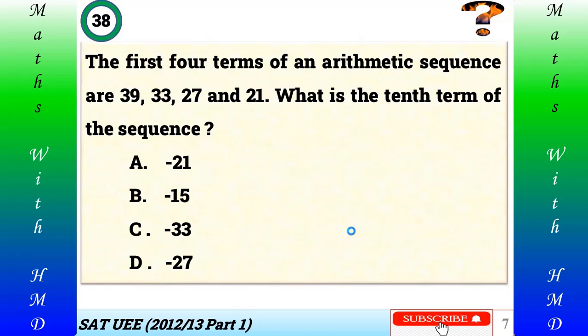Question number 38: The first four terms of an arithmetic sequence are 39, 33, 27, and 21. What is the tenth term of the sequence? A) -21, B) -15, C) -33, D) -37. As usual, try by yourself and check your answer.